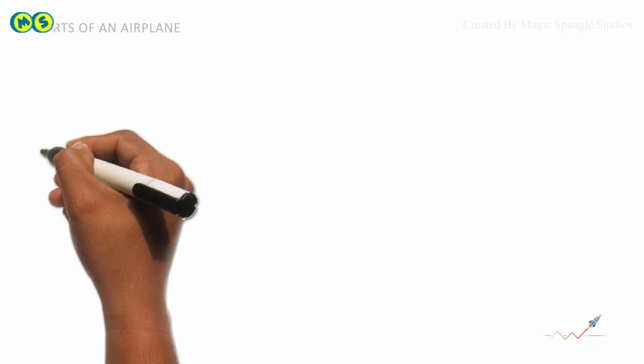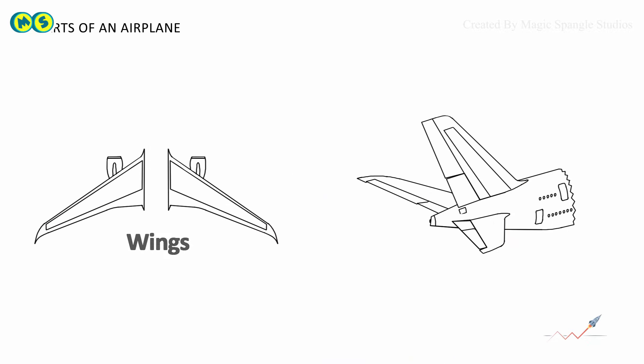Parts of an airplane. The basic parts of an airplane are 1, wings, 2, horizontal stabilizer, and 3, vertical stabilizer.